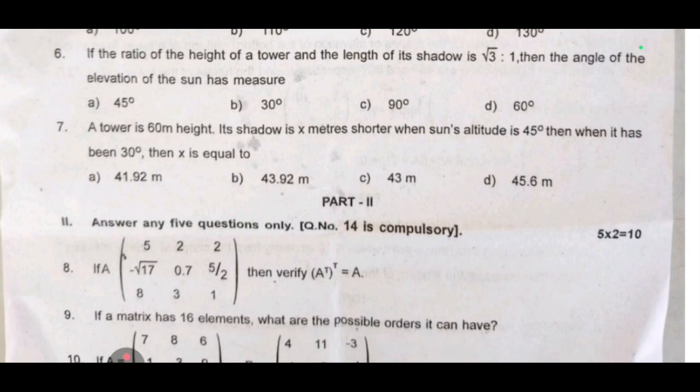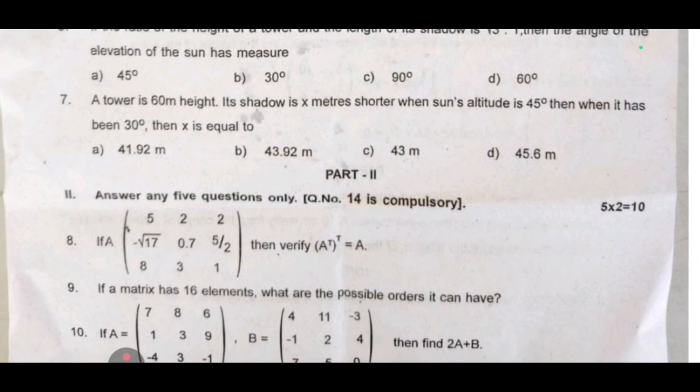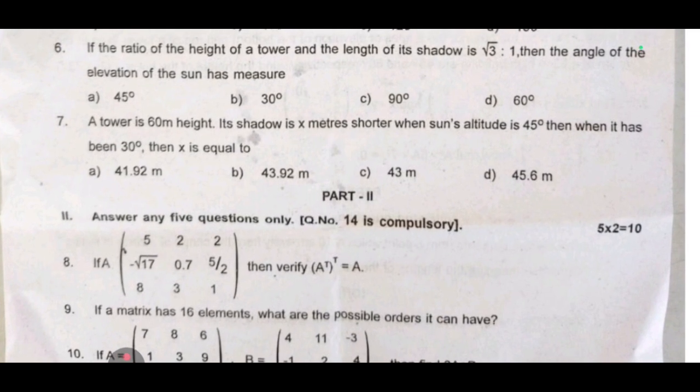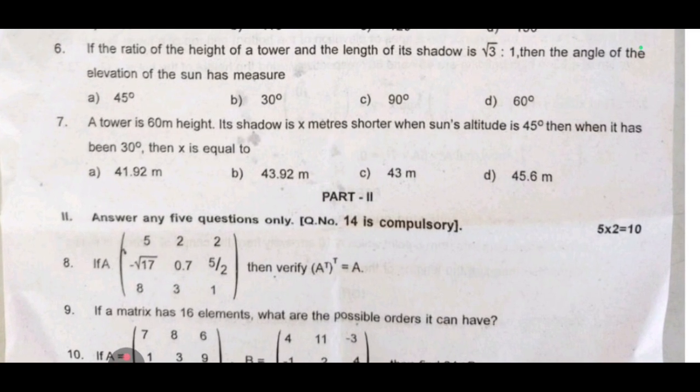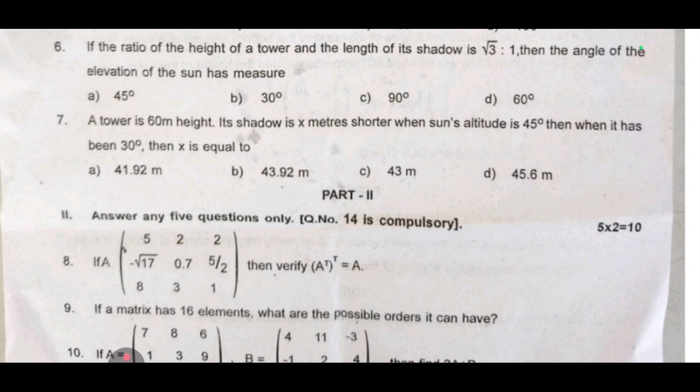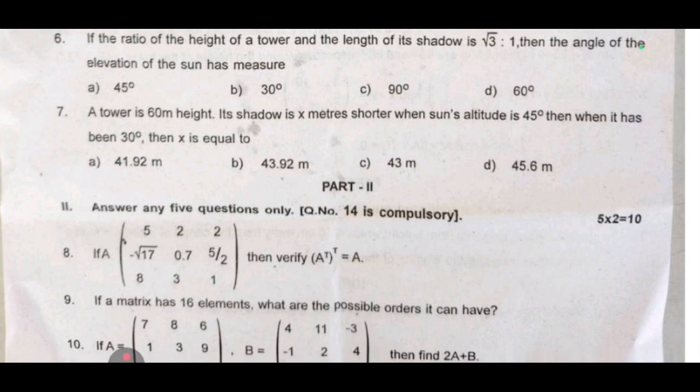Seventh one: a tower is 60 meter height. Its shadow is 6 meters shorter when sun's altitude is 45 degree then when it has been 30 degree, then x is equal to dash.